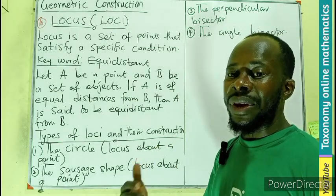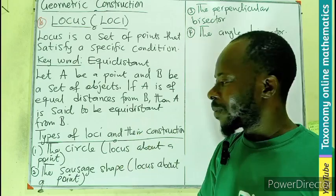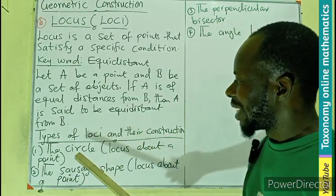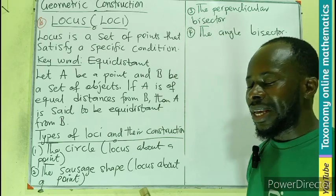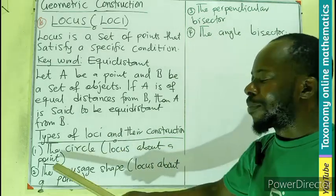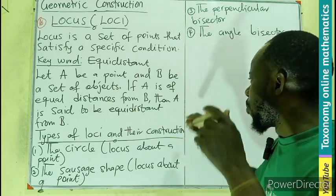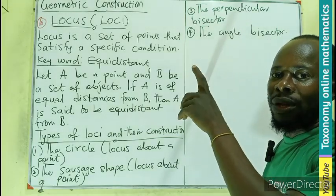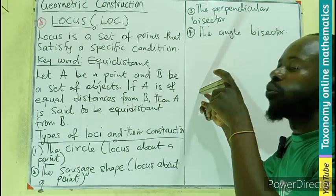There are various types of equidistance which is described as locus that we will be treating. The first one is going to be a circle or the circle. The question could be the locus about a point. So if you have a point, if the point is here and we want to construct a locus which is five centimeters away from this point,